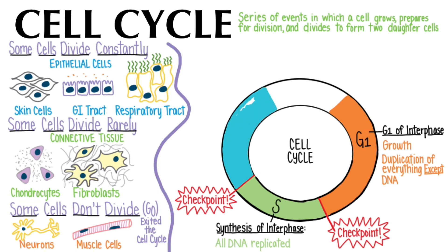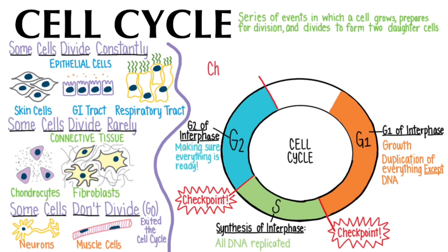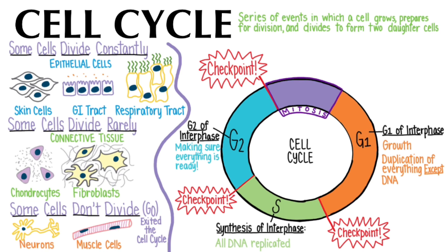The last part of interphase is G2, and this is when the cell finalizes preparation for division, making sure everything is ready. A third checkpoint confirms the cell is still healthy and ready to divide. Finally, the cell enters mitosis, which is divided into four phases with the acronym PMAT. Prophase is when the newly duplicated DNA condenses into tightly packaged chromosomes. Metaphase is when these chromosomes line up in the center of the cell, after which a final checkpoint confirms that the chromosomes are lined up nice and straight and properly attached to spindle fibers.